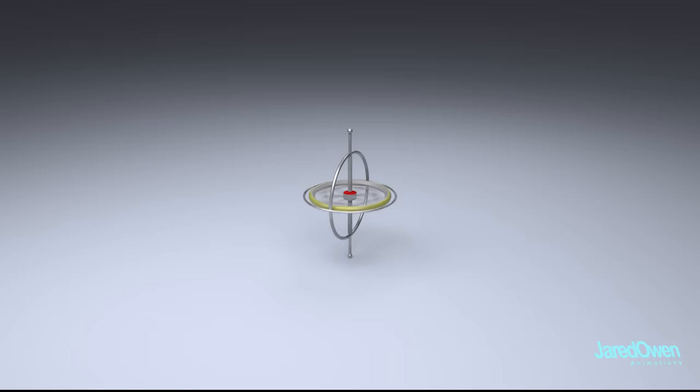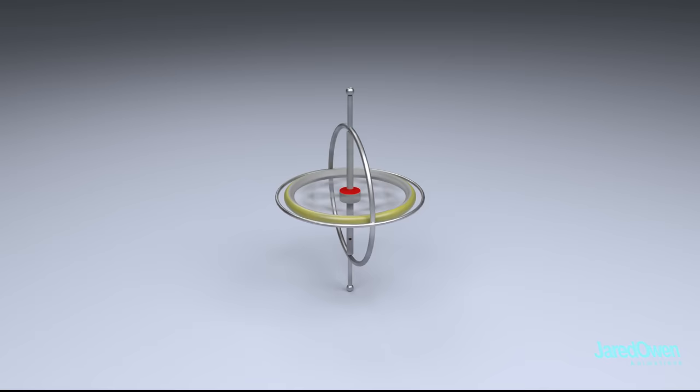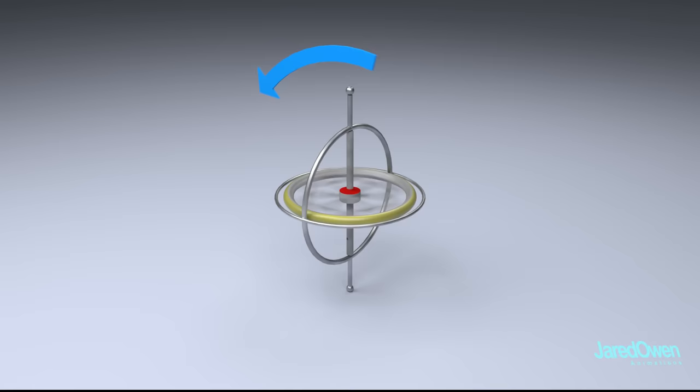But there are some strange properties about a gyroscope that's not very intuitive. Let's say our gyroscope is spinning, and we try to rotate the gyroscope on another axis. The resultant force is actually 90 degrees in this direction. This phenomenon is referred to as gyroscopic precession.